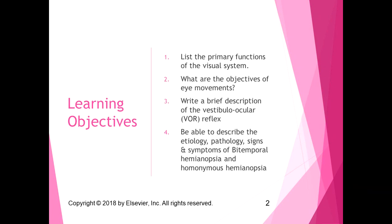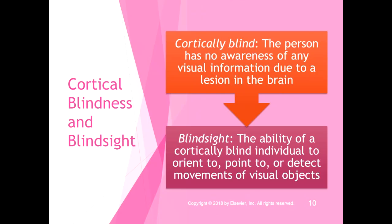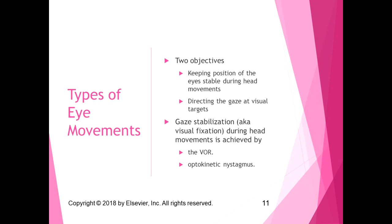In the first part of the visual system lecture we talked about the primary function of the visual system and the pathologies. Now we're going to talk about eye movements and their objectives. There are two objectives of eye movements: one is keeping the position of the eyes stable during head movements, and the other is directing the gaze at visual targets.